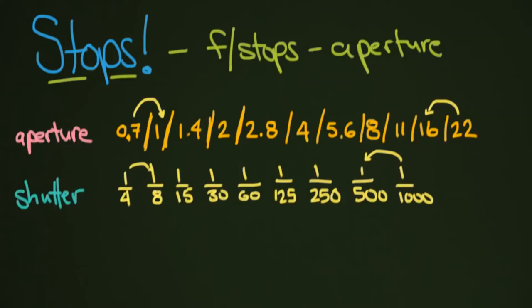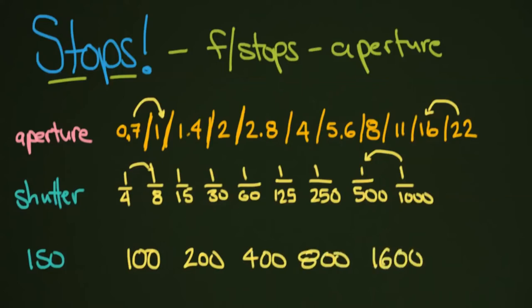Also, same thing is going to apply for your ISO. ISO is going to be measured in increments. There's slower films and faster films, and there are between steps too as well, just like with all this. But generally, you're going to see 100, 200, 400, 800, and 1,600.